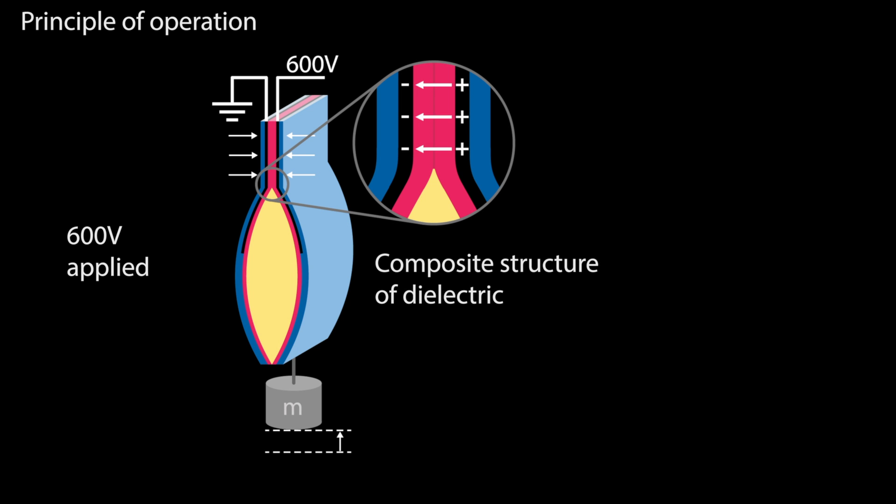The design involves laminating the electrode between a structural outer shell and a high-permittivity dielectric. This configuration allows for lower actuation voltages compared to state-of-the-art electrohydraulic actuators.